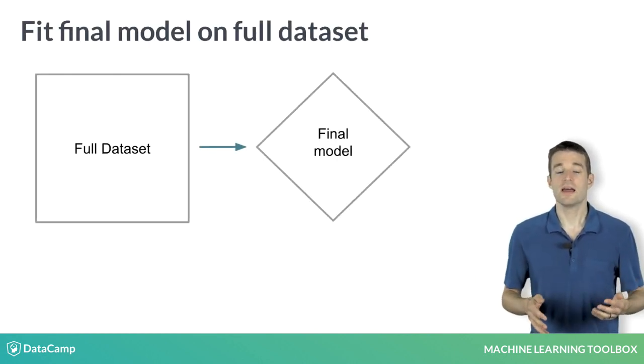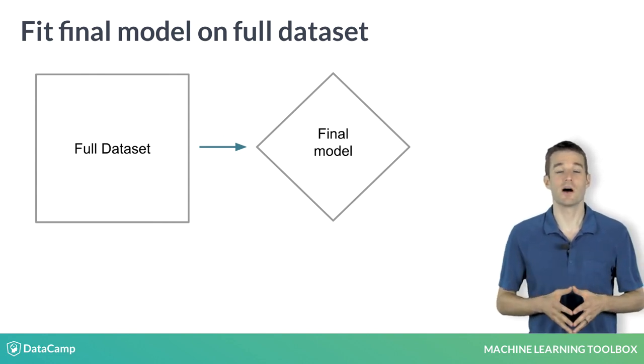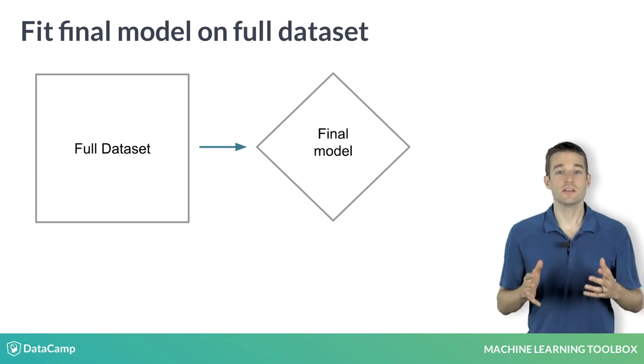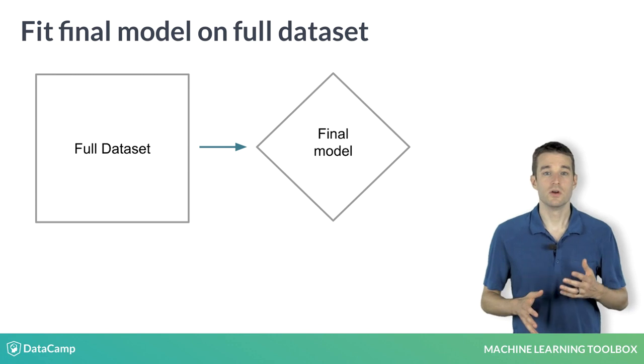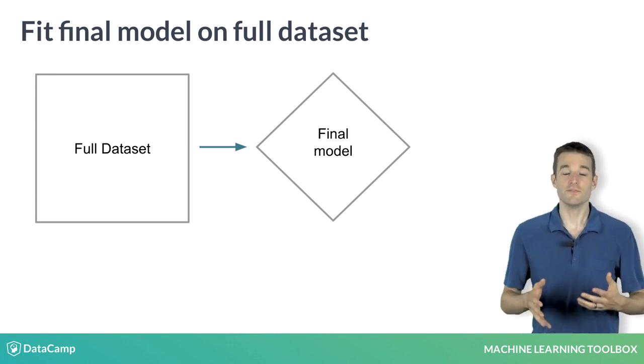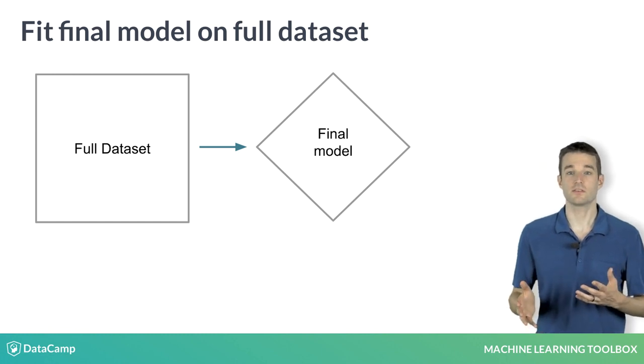One important note: after doing cross-validation, you throw away all the resampled models and start over. Cross-validation is only used to estimate the out-of-sample error for your model. Once you know this, you refit your model on the full training data set so as to fully exploit the information in that data set.